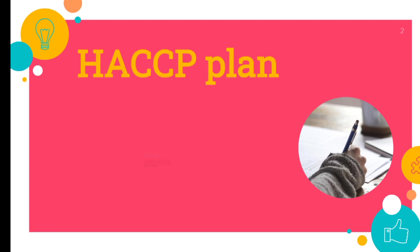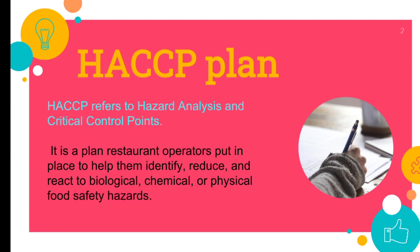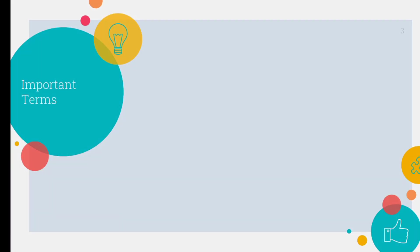First, let's discuss about what is HACCP plan. HACCP is Hazard Analysis and Critical Control Point. HACCP is a systematic preventive approach to food safety so that the finished product is safe. So before moving to the HACCP plan, let's discuss about some important terms.